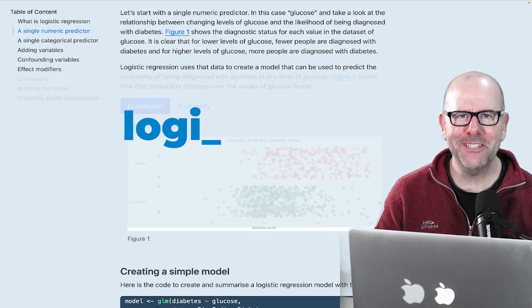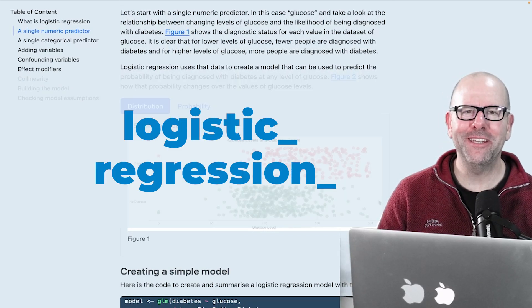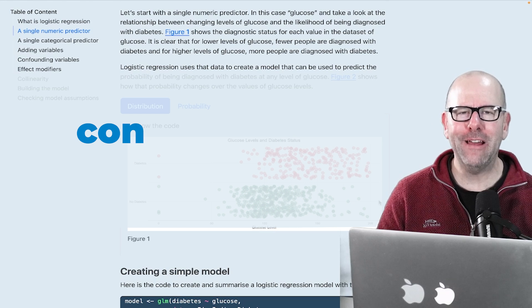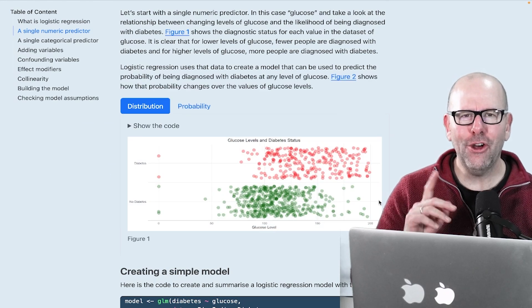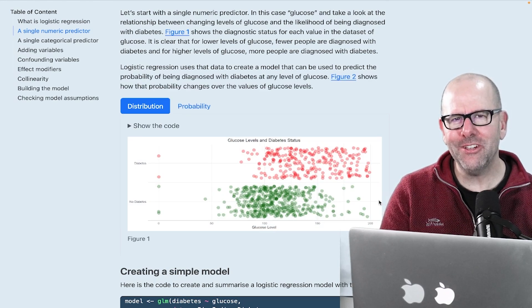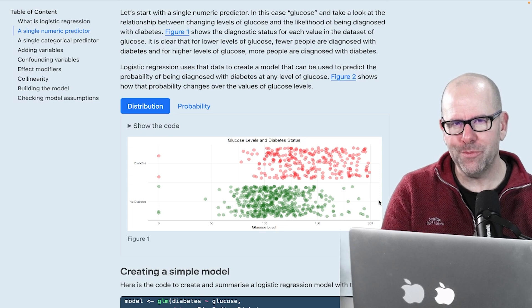Welcome back. We're talking about logistic regression and in this video we're going to deal with the issue of confounding variables. Not that complicated, reasonably easy to understand, but important to get your head around. So stick with me.